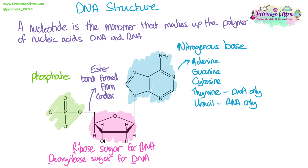The parts of the nucleotide are held together by different covalent bonds. An ester bond, formed from a condensation reaction, holds together the phosphate and the sugar. And a glycosidic bond is formed between the sugar and the nitrogenous base — again formed via a condensation reaction.